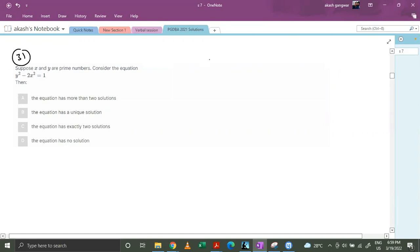Let's discuss question number 31. Suppose x and y are prime numbers. Consider the equation y square minus 2x square equals to 1. So basically we have been given an equation y² - 2x² = 1, where y and x both are prime numbers.